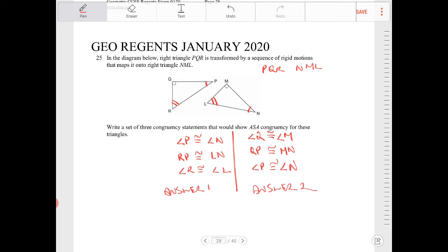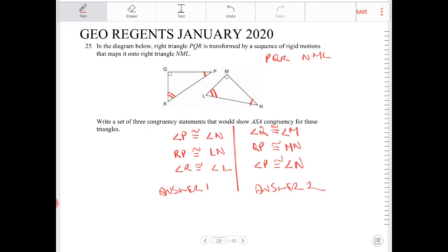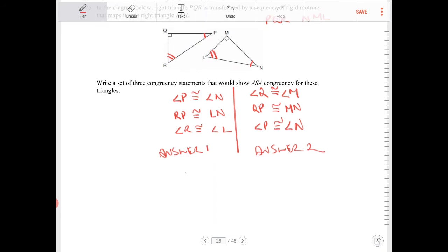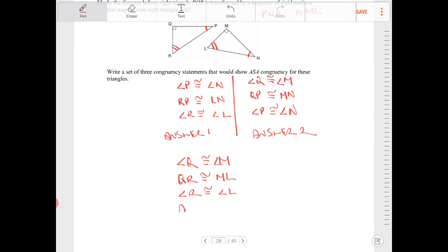There are three different possible ways that we can do this. Should I write out the last one? Sure, let's do that. So I can also say that angle Q is congruent to angle M. And angle R is congruent to angle L. This is answer 3. Any of these would have been sufficient answers to show ASA.